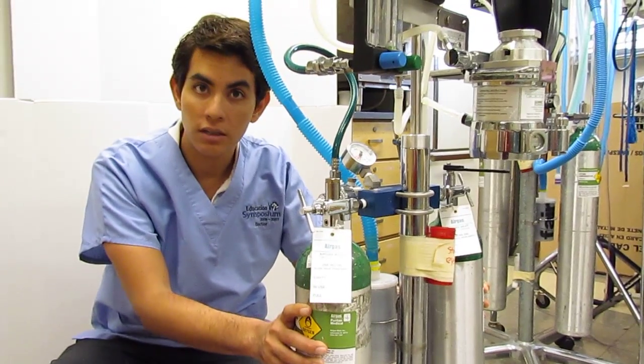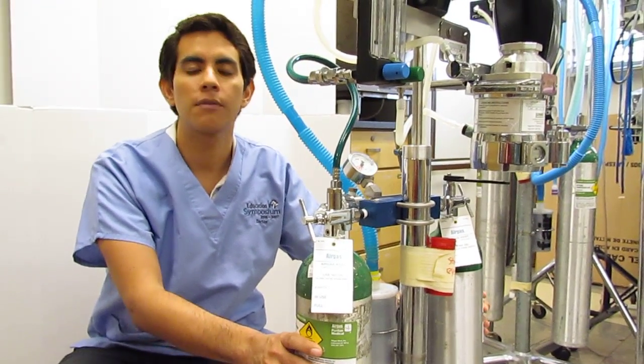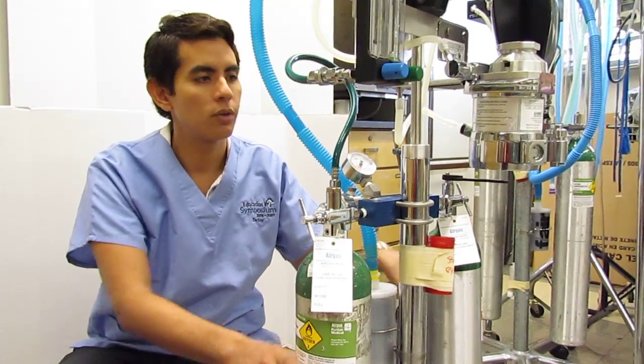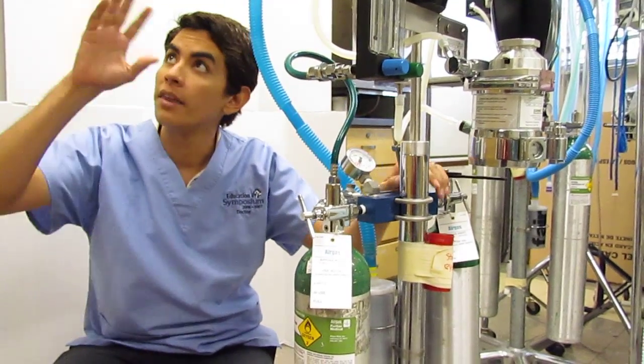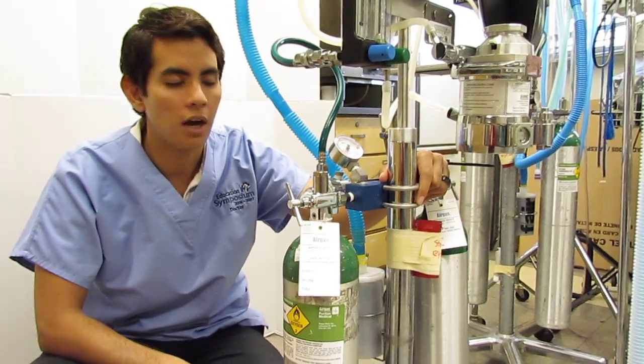Then there's also H tanks, which H is for huge. Those are usually in the back of the building connected to a network of green tubing that then comes down from the ceilings in each of the rooms of the hospital.